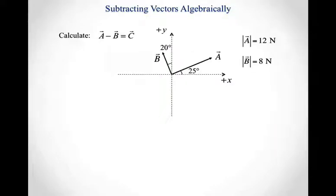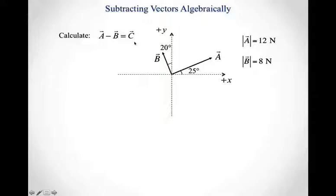Let's look at an example. We have two vectors: vector A has a magnitude of 12 newtons and makes an angle of 25 degrees above the positive x-axis. Vector B has a magnitude of 8 newtons and makes an angle of 20 degrees to the left of the positive y-axis. We want to calculate vector A minus vector B, which we'll call vector C. So the equation we're setting up is A minus B equals C, as a vector equation.